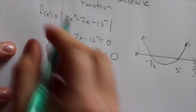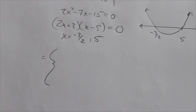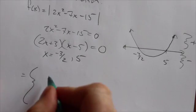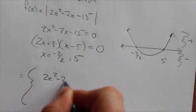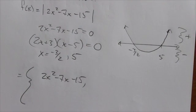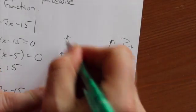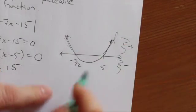So my absolute value - if I write this as a piecewise function, remember the absolute value does one of two things. It either leaves the function alone if it's positive or it puts a negative sign in front if it's negative. So this thing right here is going to be left alone when the function is positive. Well, when is the function positive? It's positive basically in this section and this section right here.